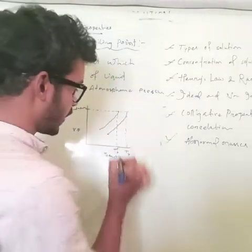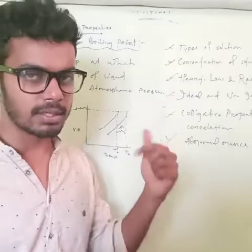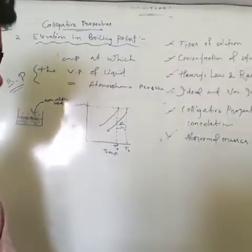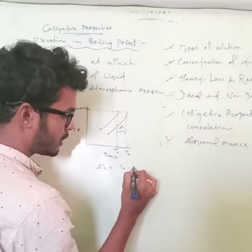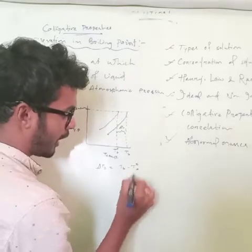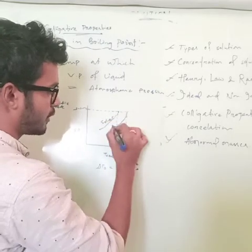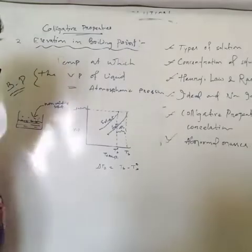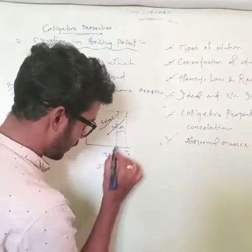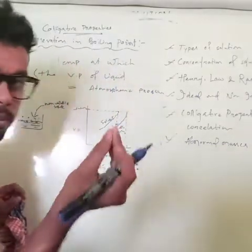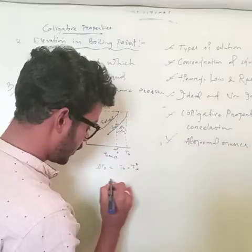This difference is known as ΔTb — the change in boiling point temperature. ΔTb equals TB (solution) minus TB⁰ (pure solvent). This temperature change depends upon the number of solute particles added, which is nothing but molality.